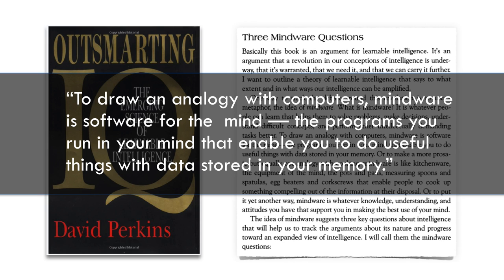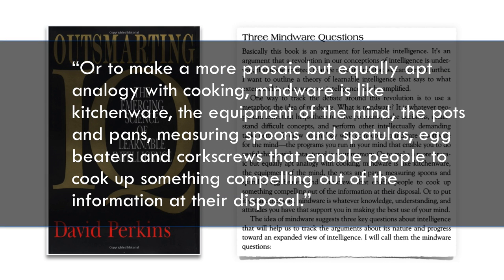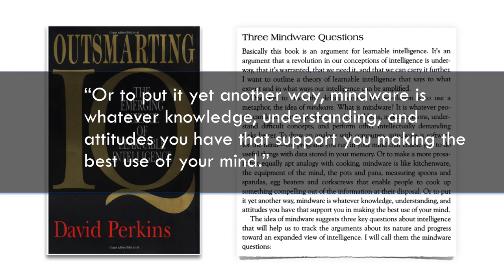For Perkins, as an academic psychologist trying to understand intelligence and human reasoning, the computational metaphor is very familiar, but the analogy with computers is not really his focus. He also offers a more prosaic analogy: mindware is like kitchenware — the equipment of the mind, the pots and pans, measuring spoons and spatulas, egg beaters and corkscrews that enable people to cook up something compelling out of the information at their disposal. More broadly, mindware is whatever knowledge, understanding, and attitudes you have that support you in making the best use of your mind. Mindware, as he's using it, is defined in terms of support for thinking — something human beings can learn that helps them make better decisions and better judgments.